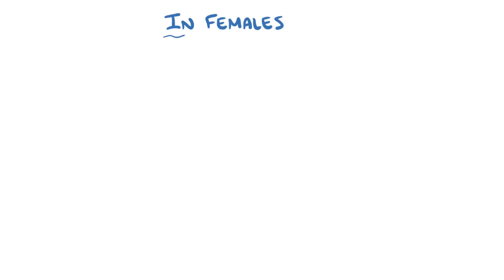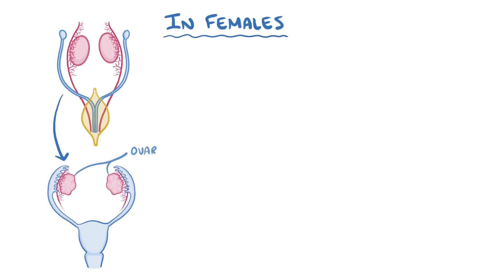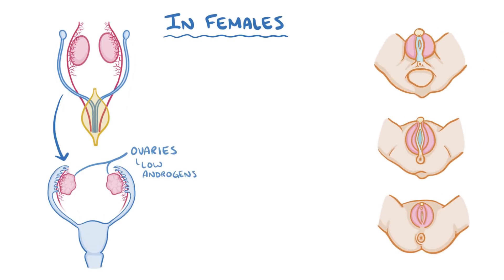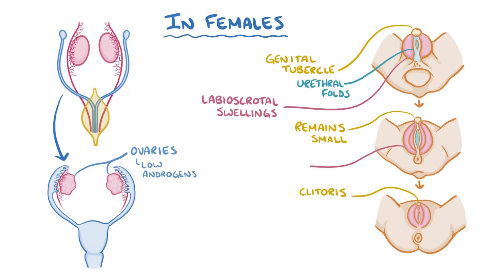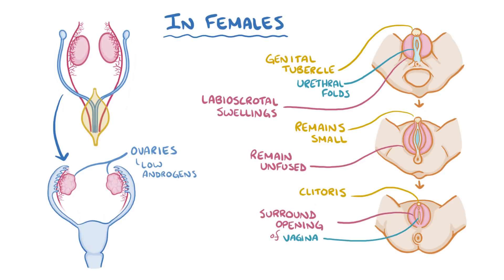In females, the gonads develop into ovaries, which produce very low levels of androgens, so the genital tubercle remains small, forming the clitoris. The urethral folds and labioscrotal swellings remain unfused or separate, and they surround the opening of the vagina. This process is usually complete by month 4 of fetal development.